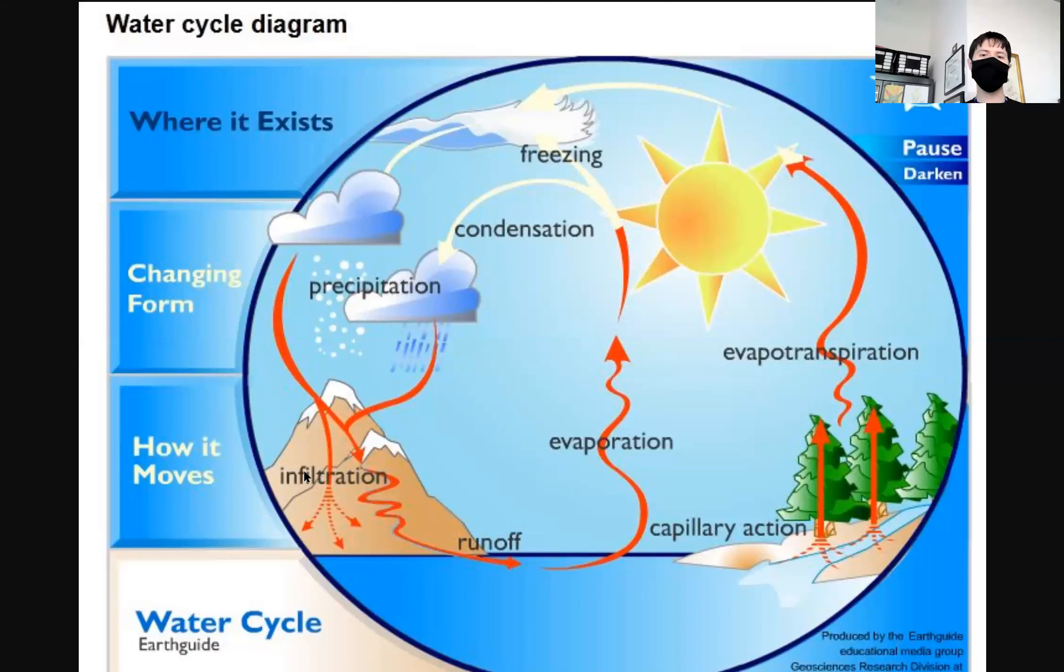But once when water evaporates from the ocean, for example, the ocean water is salt water. And so when water evaporates, you don't have salt water evaporating. You have water evaporating, but the salt gets left behind. And you can try this at home too. If you take, if you just make a little salt water solution, put it into a skillet, let it boil. The water will evaporate, but you'll see that the salt is left behind.